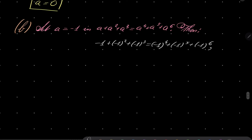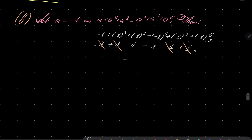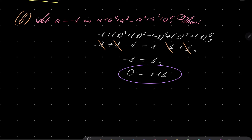And now we have minus 1 plus 1 minus 1 equals 1 minus 1 plus 1. Since we are dealing with addition and we know that addition is commutative in any ring, and it has an inverse — an opposite element — we can cancel this minus 1 with this plus 1, and this plus 1 with the other, and we have this curious property that minus 1 equals 1 in this ring. So 0 equals 1 plus 1. Let's remember that, because it's very important: 0 equals 1 plus 1.